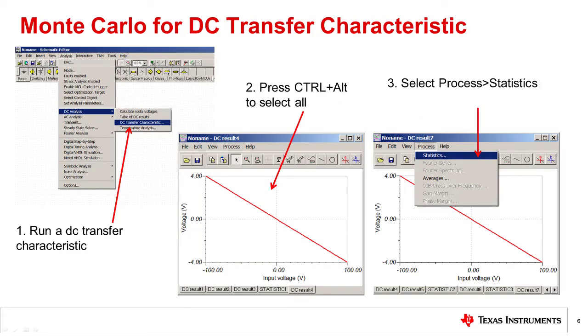Now that the Monte Carlo function is turned on, any analysis will run as a Monte Carlo analysis. In this example, a DC transfer characteristic is run. So the DC transfer function is simulated 1,000 times using random Gaussian resistor values for each simulation.